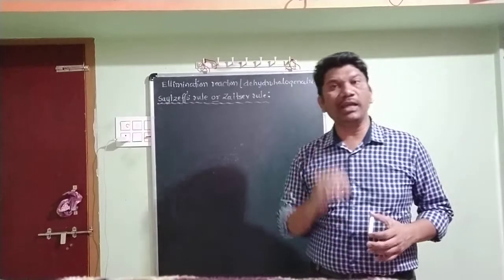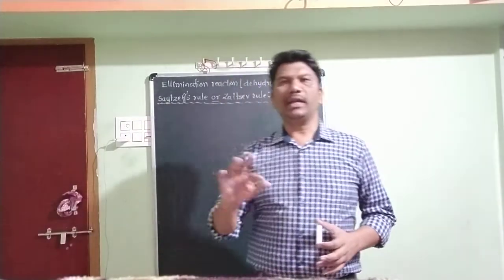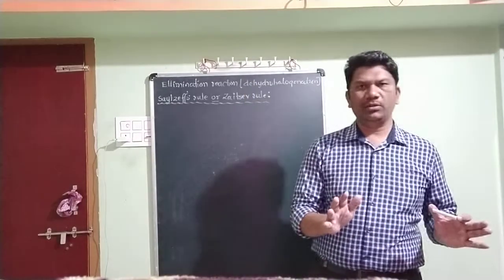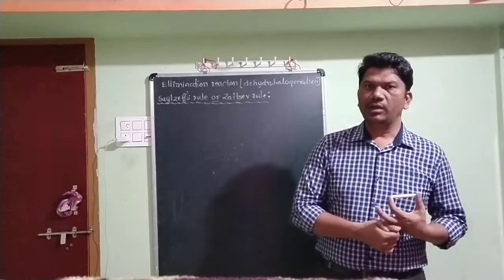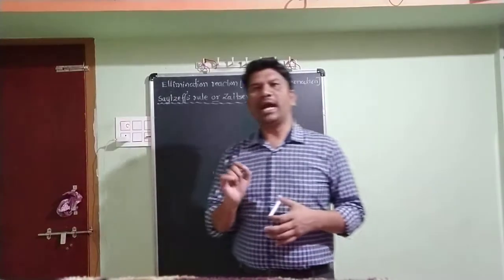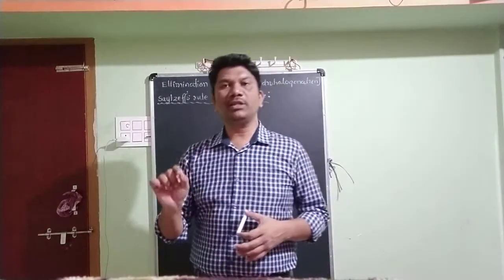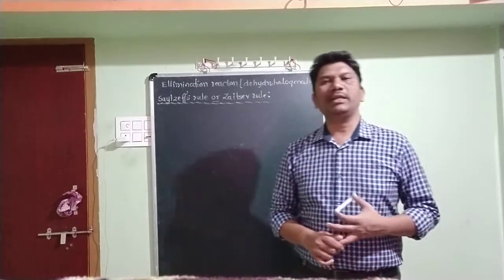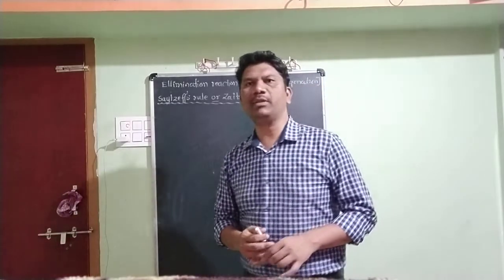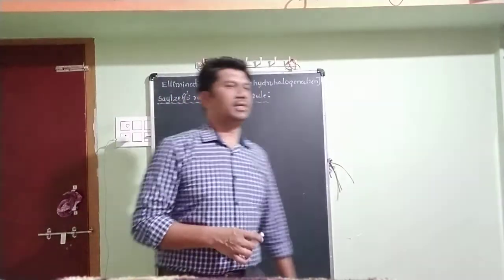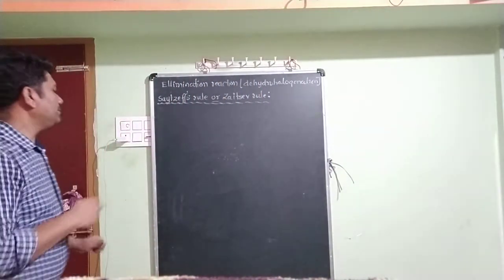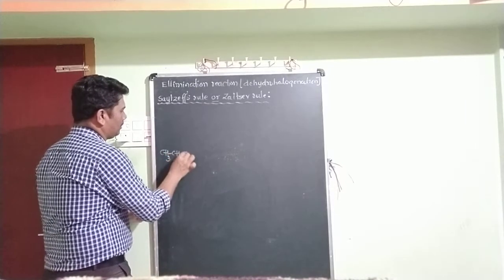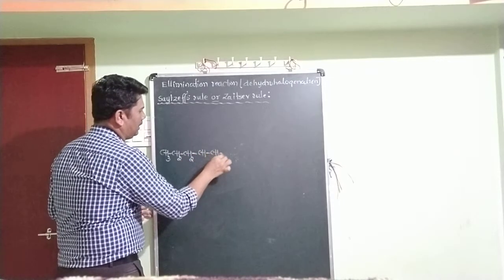If dehydrohalogenation of a haloalkene can yield more than one alkene, the major alkene will be the highly substituted alkene. To carry out dehydrohalogenation you need a dehydrohalogenating agent. Here the dehydrohalogenating agent is alcoholic potassium hydroxide (alc. KOH). I'll take one haloalkene: CH₃CH₂CH₂CH(Br)CH₃.